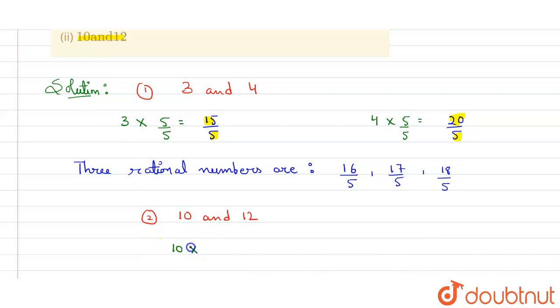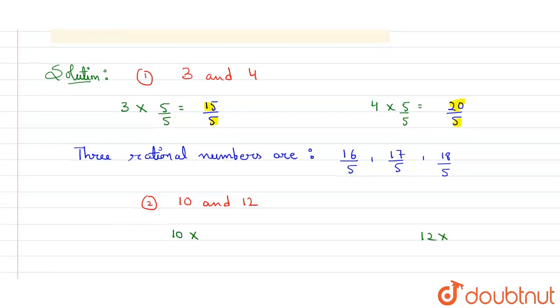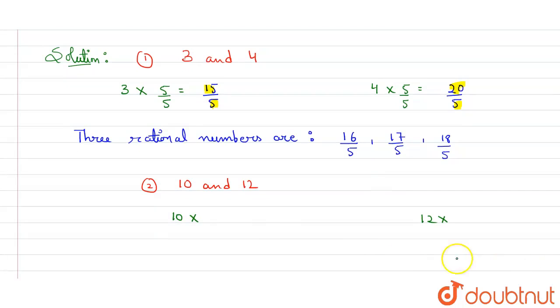So here 10 multiply with, and here 12 multiply with. We have taken 5 by 5 in the previous example, now let's take 6 by 6 here. So it will be 60 by 6, and here 6 by 6, it will be 12 times 6, which is 72 by 6.